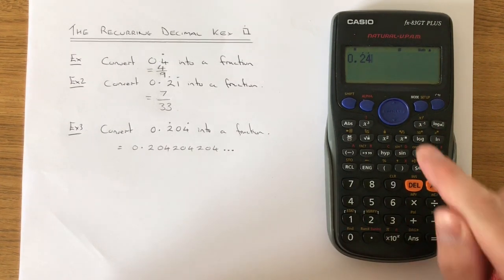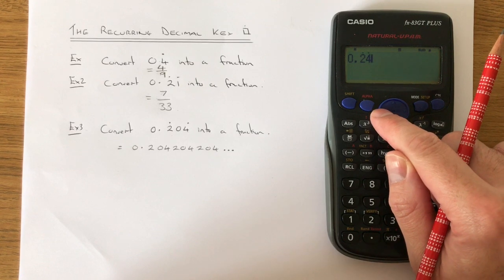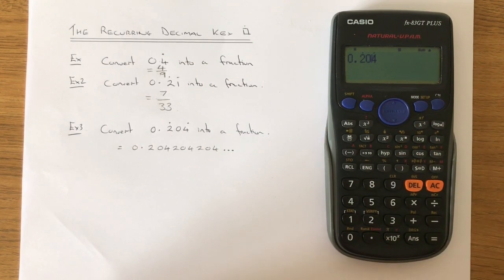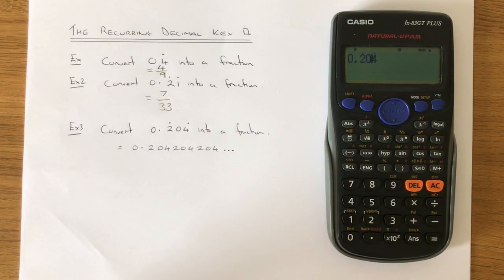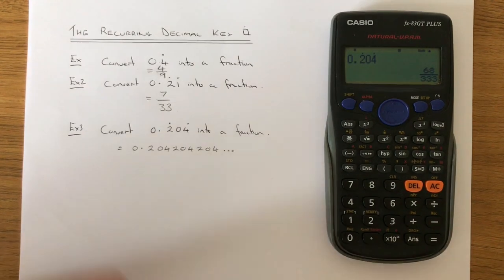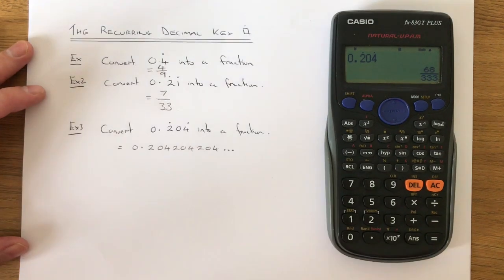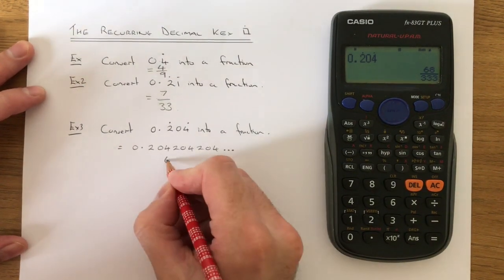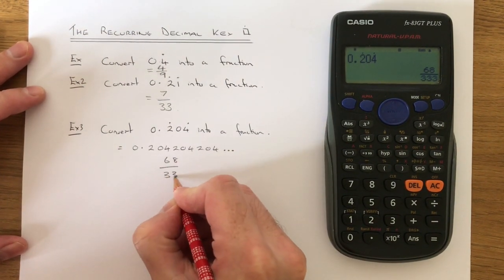And then what you can do is go back with the replay key and put the 0 in between the 2 and the 4. Hit your equals and our answer will be 68 over 333.